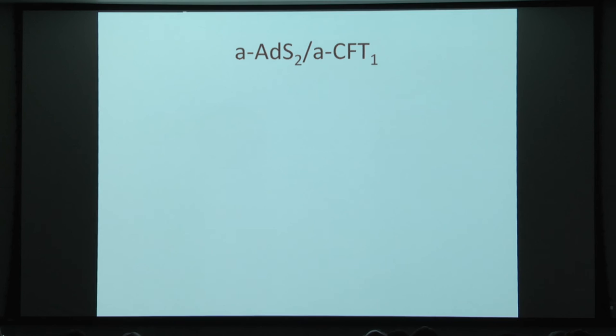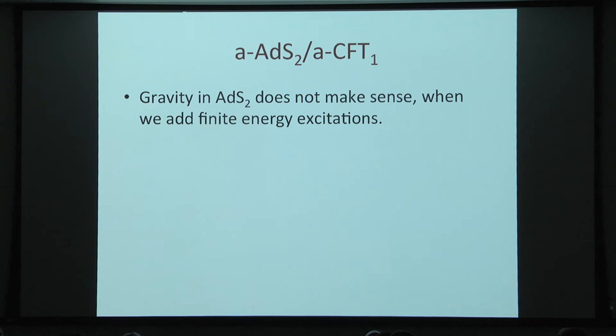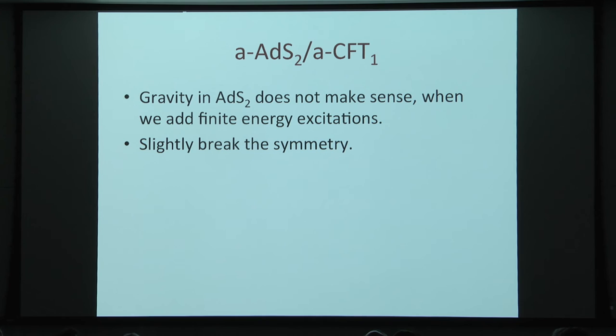My interest in this is mainly the fact that this has exactly the right flavor for being related to AdS_2, or near-extremal black holes. Near-extremal black holes have a nearly AdS_2 region. And again, as in this quantum mechanical model, gravity in AdS_2 by itself does not make sense. If you add small excitations to AdS_2, they destroy the AdS_2 boundary conditions — you get infinities, you get answers that don't make sense. So the only thing that makes sense is to slightly break the symmetry.